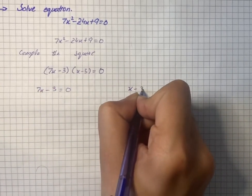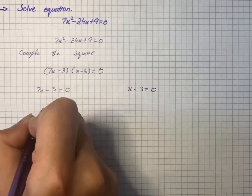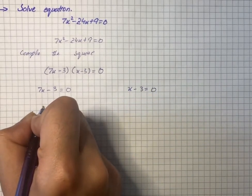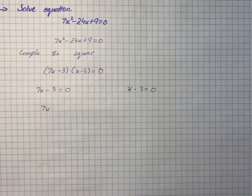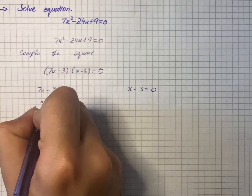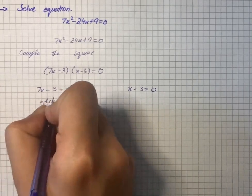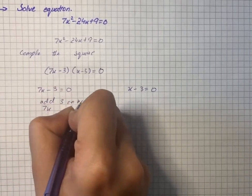write x - 3 = 0. So for 7x - 3, we will add 3 on both sides.